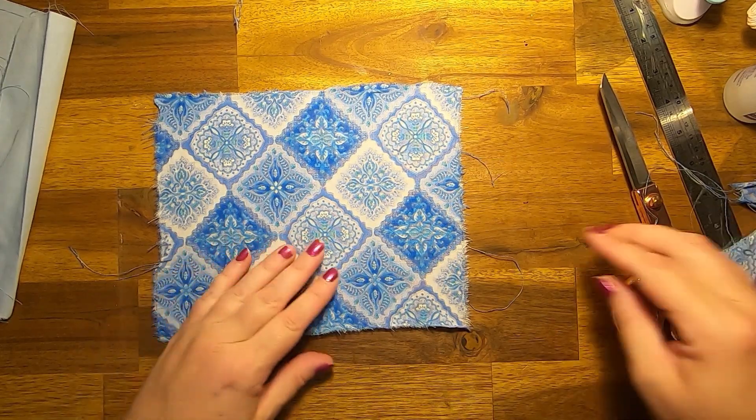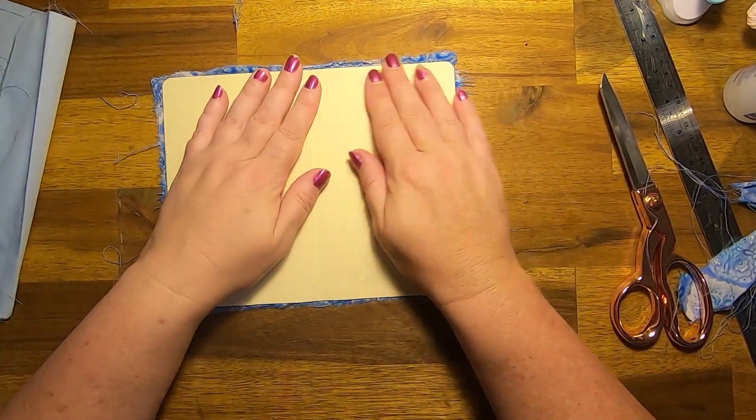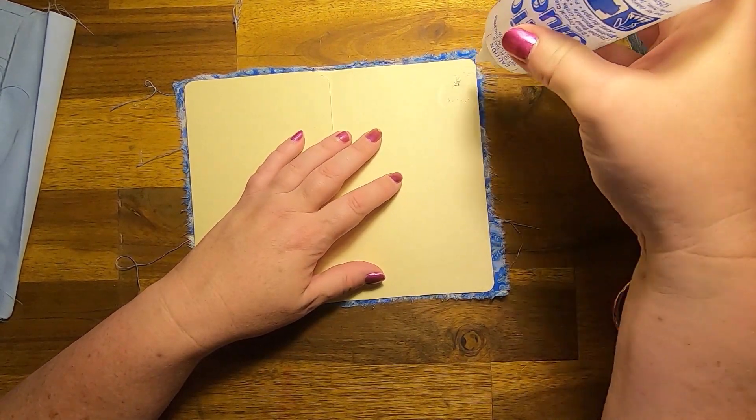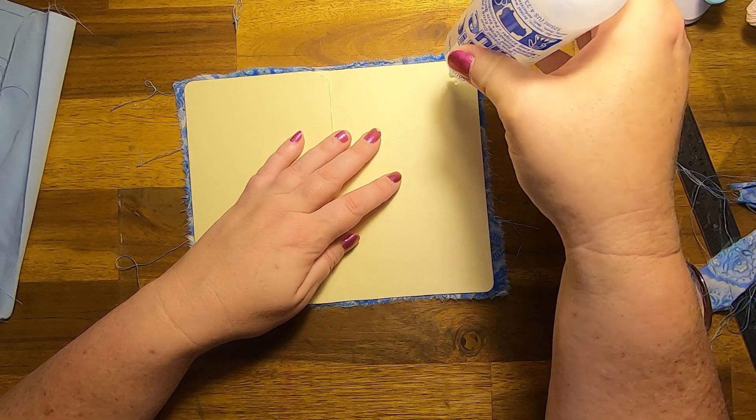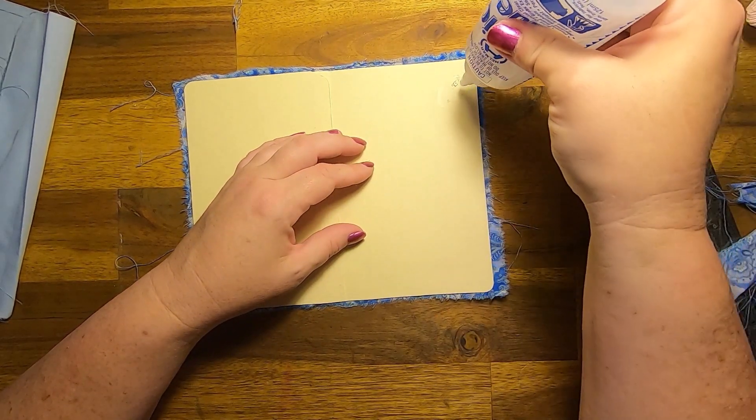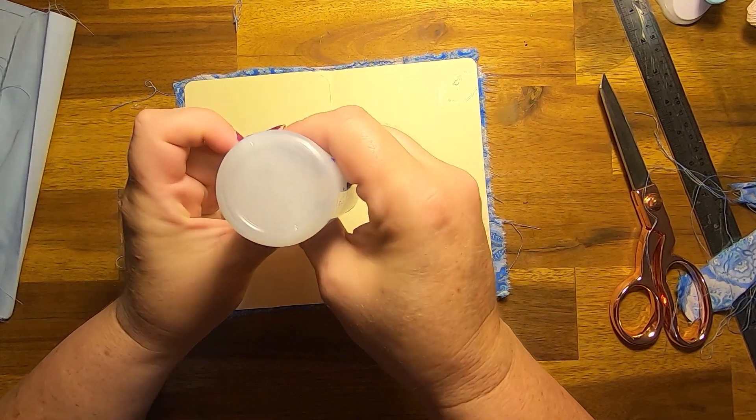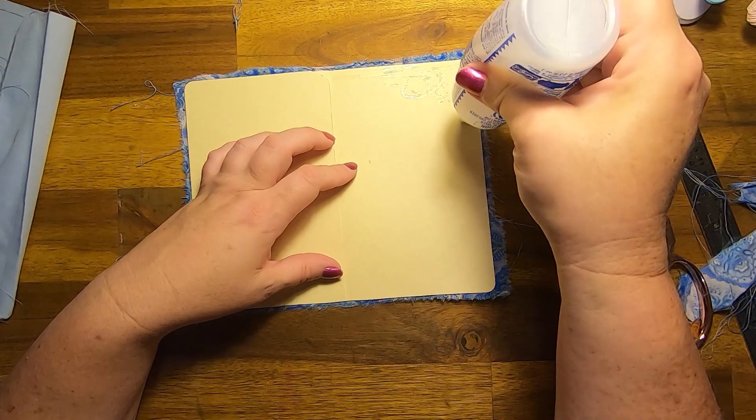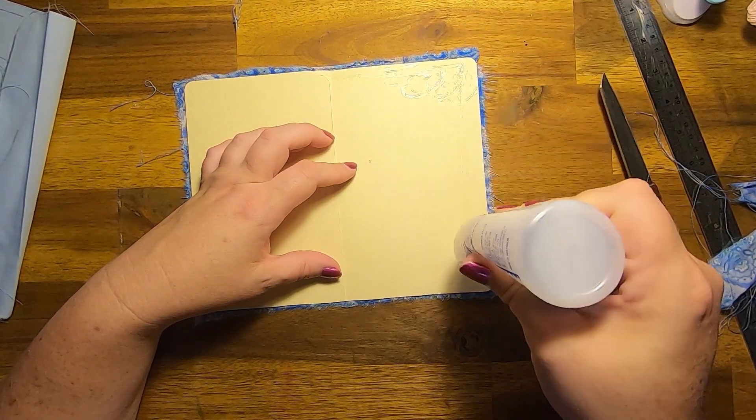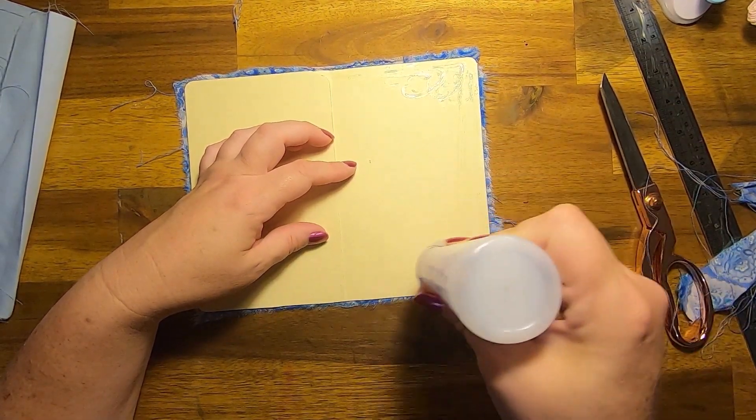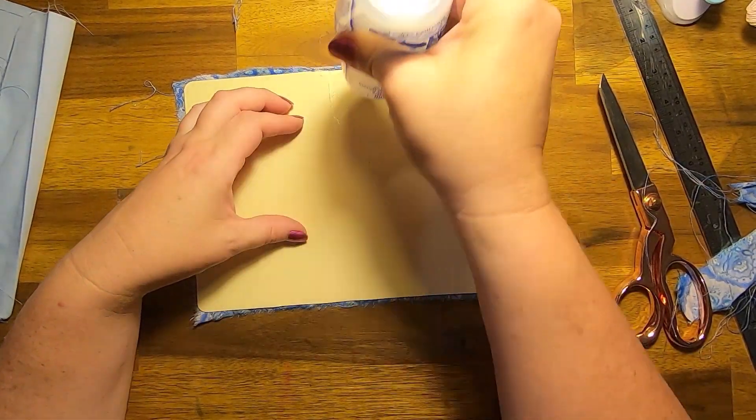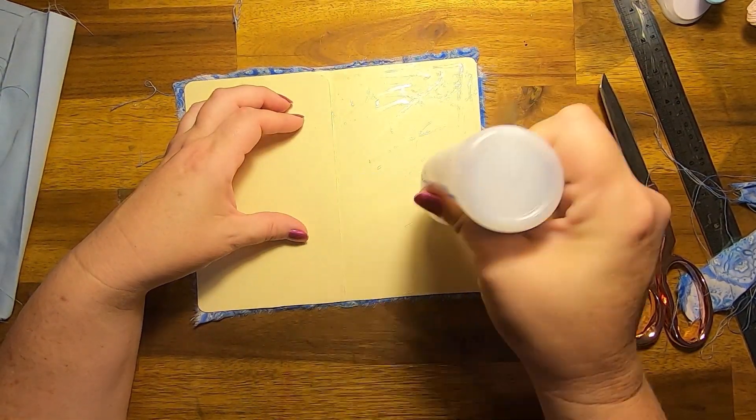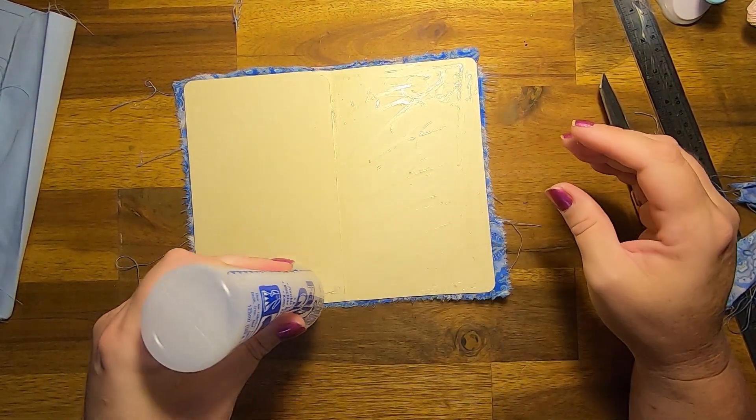All right, now we want to flip it over and do the inside. Shouldn't have turned my glue up. I've had it sitting upside down so that it would run out properly. And I just turned it the wrong way. But it's working now.